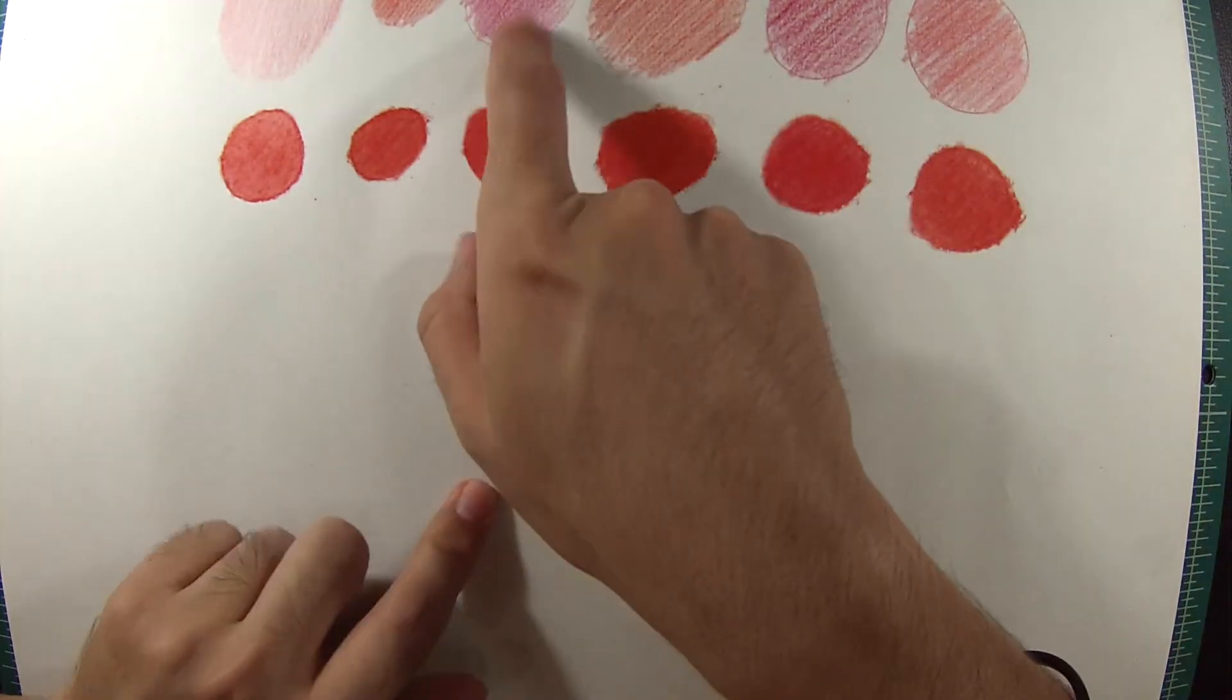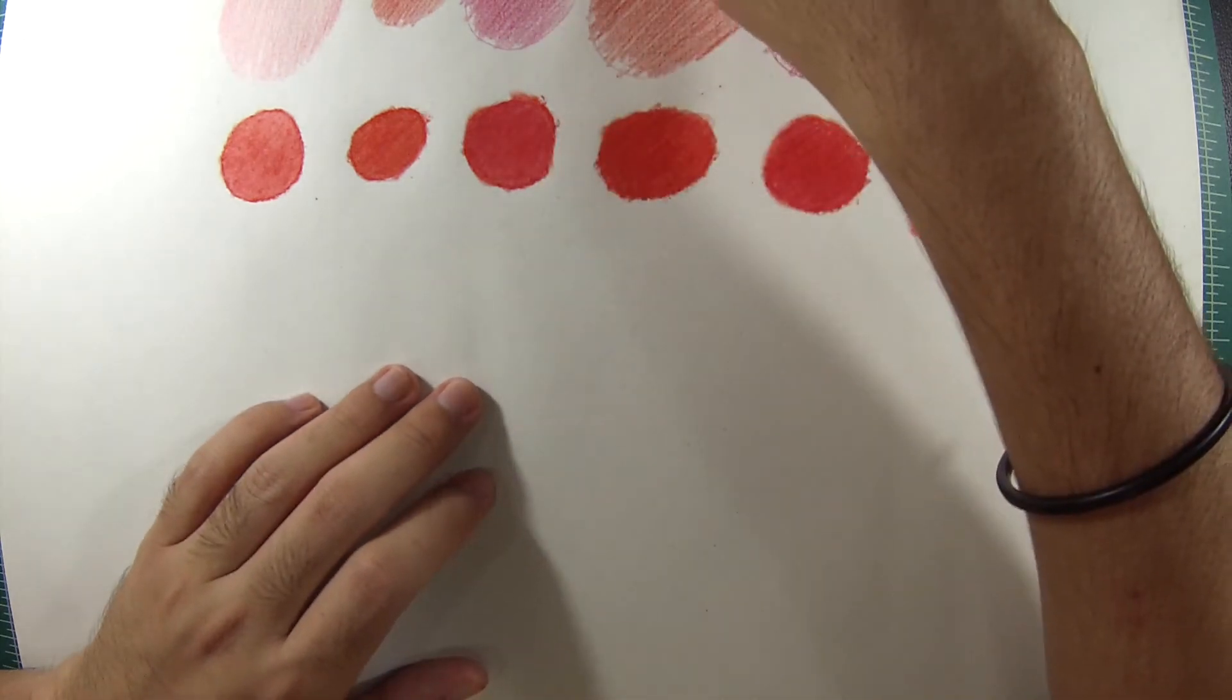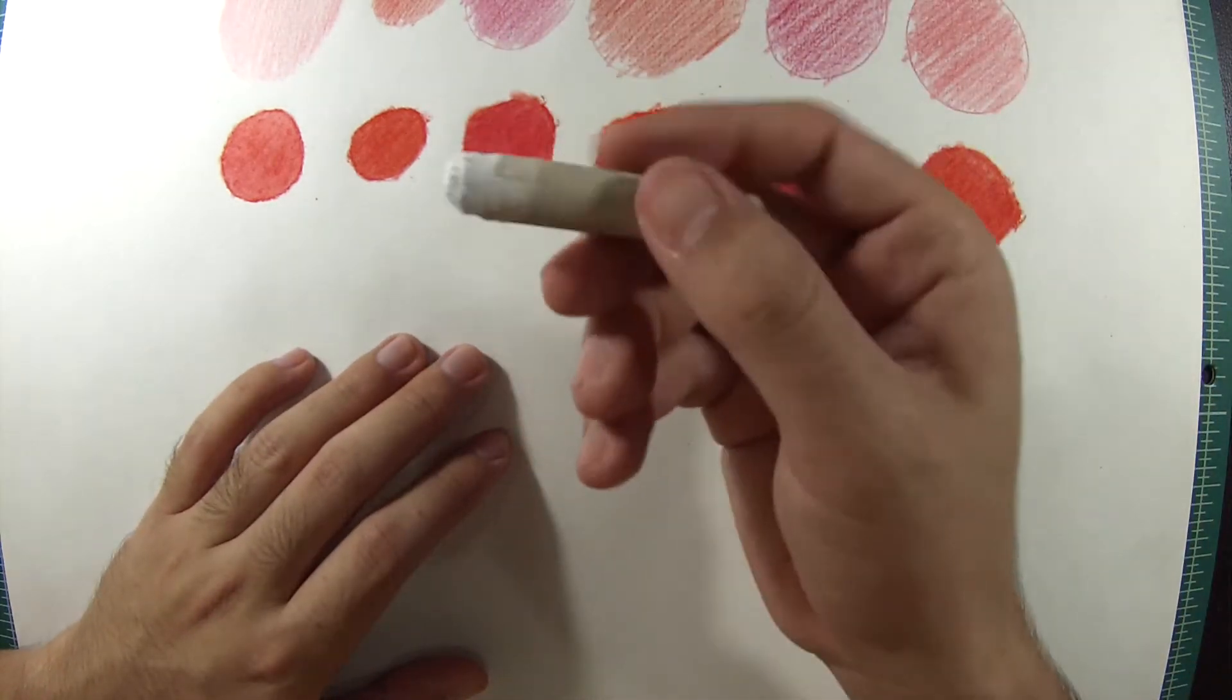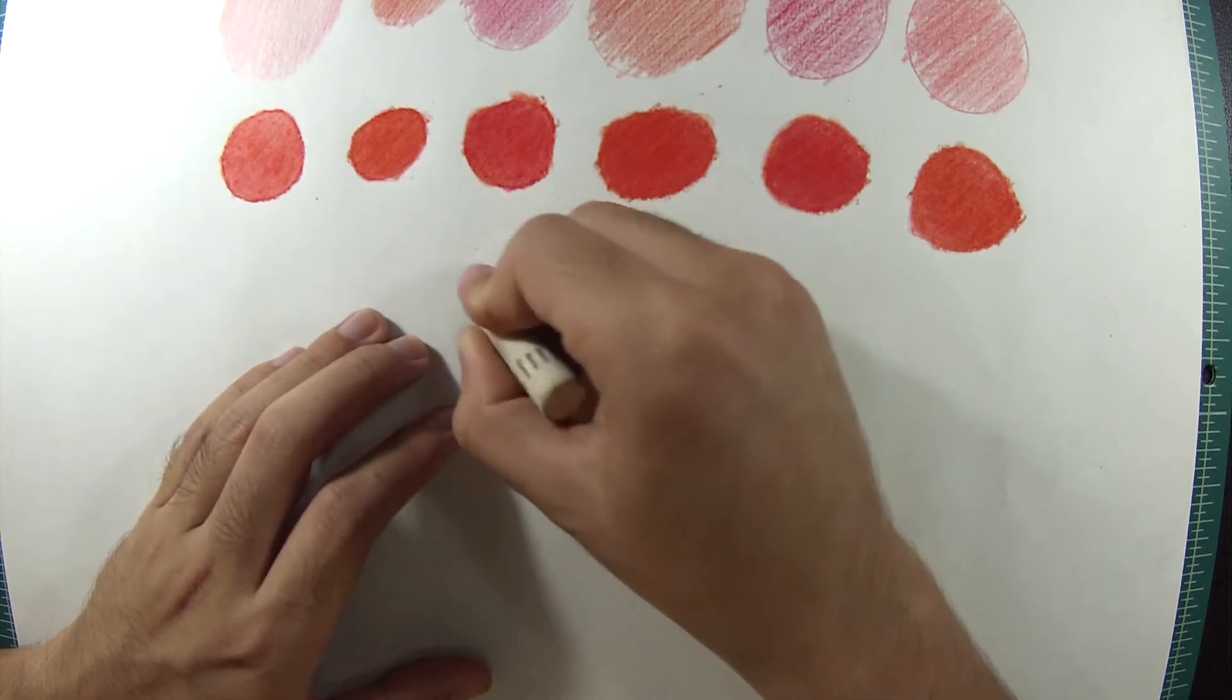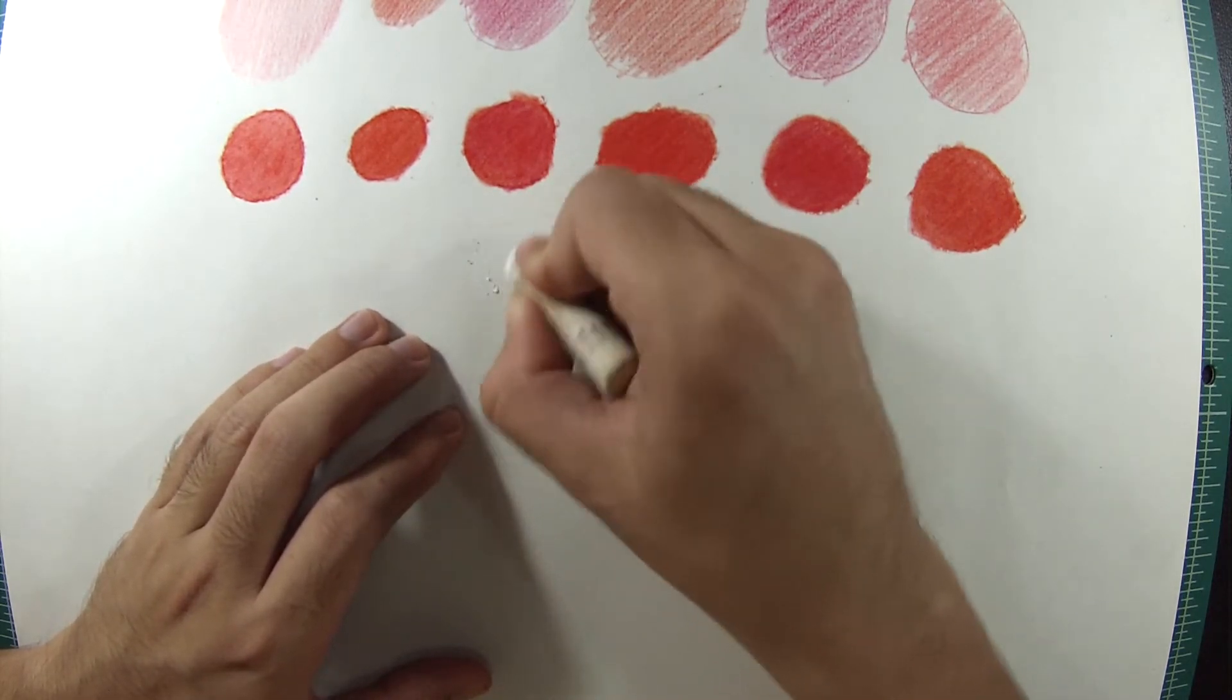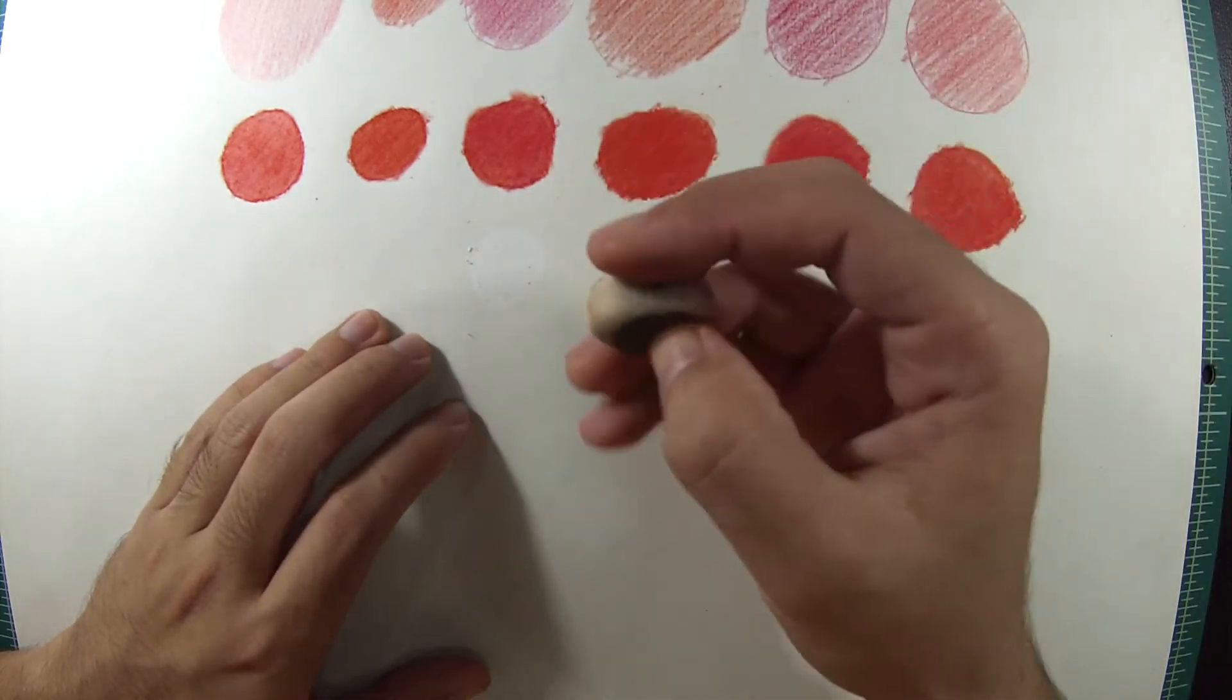The top one and the bottom one, they have a different color. But let's say you want the same color. Just use your white panda pencil and then do the same technique that I did with the red ones, the middle row then. Use the eraser, blend it a bit.